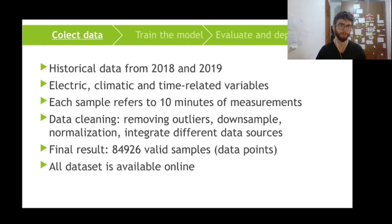And other operations that were performed: with this downsample to 10 minutes, we removed some outliers or errors of measurement, we normalized the data to make it easier to train the models, and we integrated different data sources, climatic data sources, the electric data sources. And the final result after this data cleaning was a dataset with 85,000 valid samples, so data points, rows in a table, and all this data is available online.